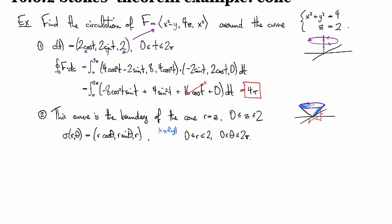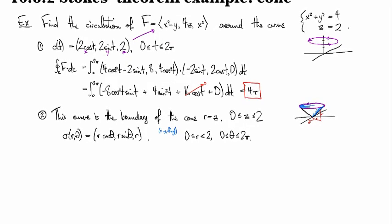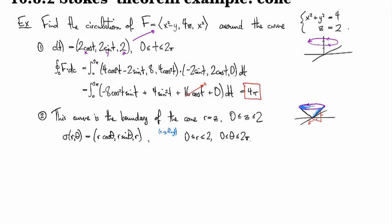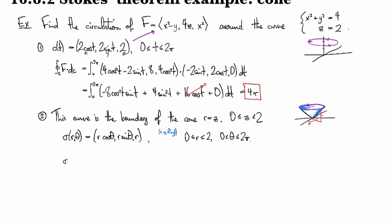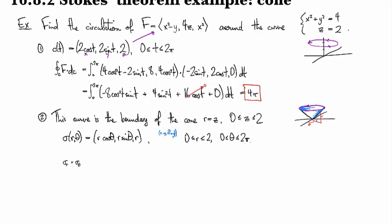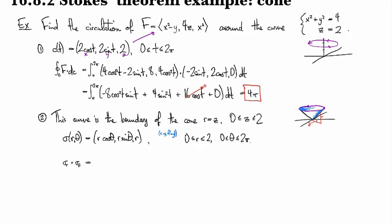Okay. So now I'm going to need to get the curl of F and the normal vector and all that junk. So let's see. So this is going to take some cross products. So Sigma_R cross Sigma_Theta. I'm going to need my area element.